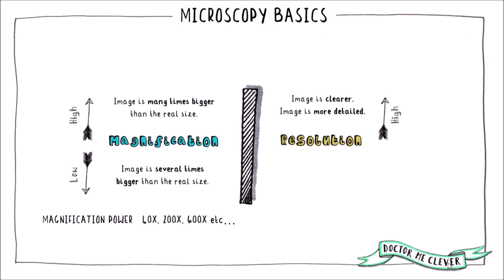If the resolution of an image is high, the image is clearer and more detailed. On the other hand, if it is low, the image is less clear and less detailed. Resolution is usually given in micro, nano or picometers and it is the distance between two points that can be resolved by the microscope.